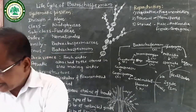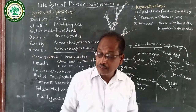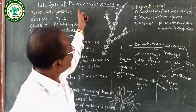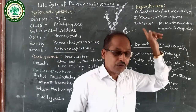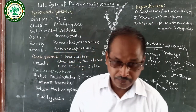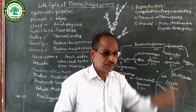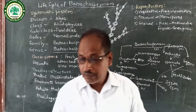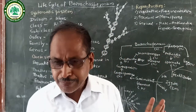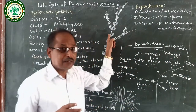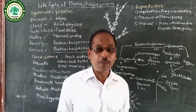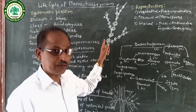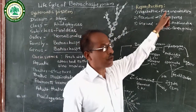The next point is Reproduction, which means production of a new individual. In Batrachospermum, reproduction takes place by vegetative, asexual, and sexual methods. In the vegetative method, it takes place by fragmentation. Fragmentation is a simple method in which the thallus breaks into small pieces or fragments, and each piece or fragment gives rise to a new individual. This is called vegetative reproduction by fragmentation.